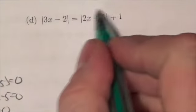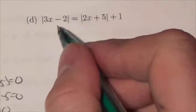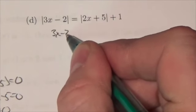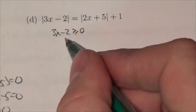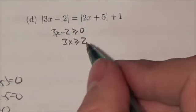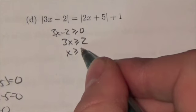The first thing I want to do is figure out where these absolute values are going to make changes and where they won't. So first of all, I'm going to test and see where 3x minus 2 is greater than or equal to 0. And that occurs where 3x is greater than or equal to 2, or x is greater than or equal to 2 thirds.